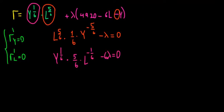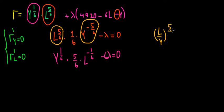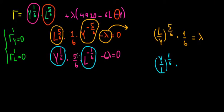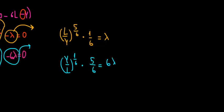Now let's take the lambdas to the other side, because we want to set lambda equal to lambda. From the first condition we get: l^(5/6) / (6 · y^(5/6)) = λ. From the second condition we get: y^(1/6) · 5 / (6 · l^(1/6)) = 6λ.